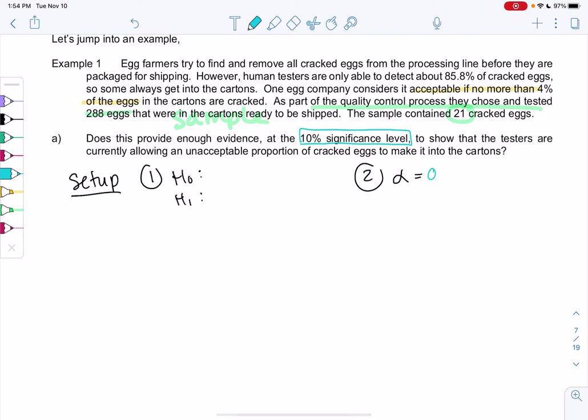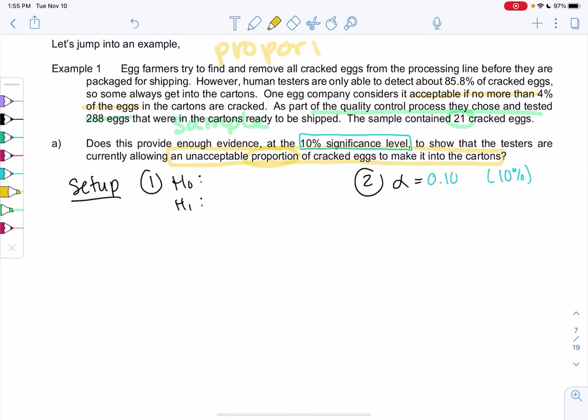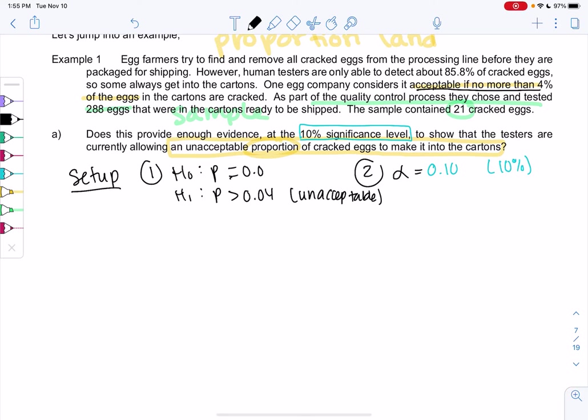Does the data provide enough evidence at 10% significance? So that's my alpha in decimal form. We'll say alpha is 0.10. That's step two. To show that the testers are currently allowing an unacceptable proportion of cracked eggs into the cartons. So we're in proportion land, no means. My hypothesis will have P and P. No more than 4 is acceptable, so more than 4 would be unacceptable. That'll be my H1. We're trying to prove that they're allowing too many cracked eggs, and our null will always just be equal to that same number, 0.04.